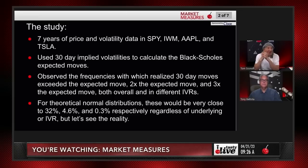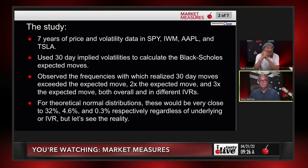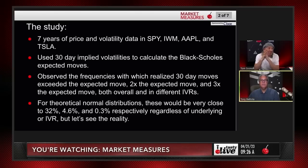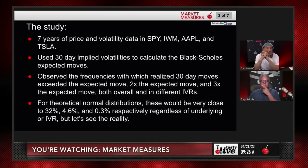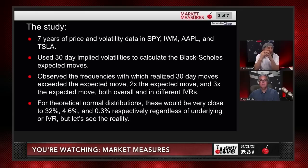For theoretical normal distributions, these should be very close to: one times expected move broken 32% of the time, two times exceeded 4.6% of the time, and three times exceeded 0.3% of the time. This is the theoretical model regardless of IVR. In reality, does it look different from the straight theoretical model? That's the real reason for doing this.